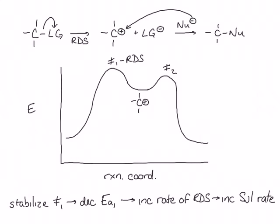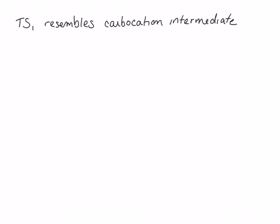In order to understand how increased substitution around the electrophilic carbon stabilizes the transition state, we need to know the structure of the transition state. Using Hammond's postulate, the structure closest in energy to transition state 1 will be most similar in structure to transition state 1, and the carbocation intermediate is closest in energy to transition state 1. Therefore, transition state 1 looks most like the carbocation intermediate, and anything that stabilizes the carbocation should also stabilize the transition state.